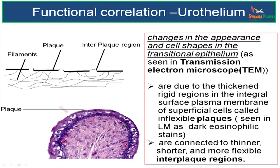There is a change in the appearance and cell shapes in the transitional epithelium when it is empty and also when it is distended. When the bladder is empty, the superficial cells of the transitional epithelium are dome-shaped umbrella cells; when the bladder is distended, the superficial cells become squamous. So cuboidal cells change their shape into squamous cells.